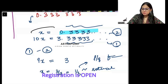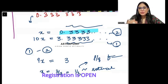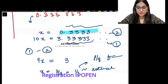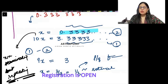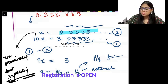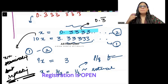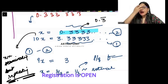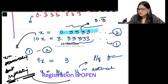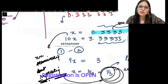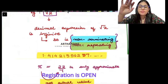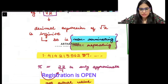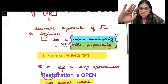So for this number, it is non-terminating but repeating. I can write this as 0.3 bar, meaning 3 repeating forever. I have been able to represent this as a rational number in P by Q form. So if a number is terminating, it can be represented in P by Q form. If it is non-terminating but repeating, then also it can be represented in P by Q form.